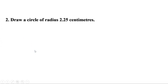Second problem: draw a circle of radius 2.25 cm. We know we cannot measure 2.25 cm using a scale, so let us double it. We get 4.5 cm, which can easily be measured. Then we can draw the bisector to get a line of length 2.25 cm.